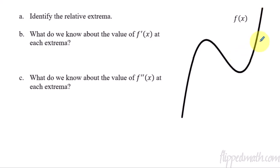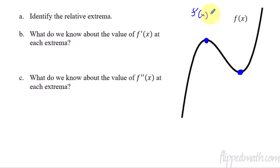To start off, we have this function here, and I want us to identify the extrema. So let's put some dots where the relative max and the relative min are. What do we know about the value of f prime at each of these extrema? We know that f prime of x is going to equal zero right there — it has a horizontal tangent. So that's also going to equal zero at the min. The first derivative is zero at both this max and the min.